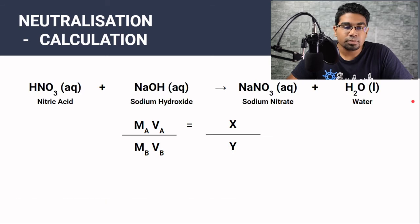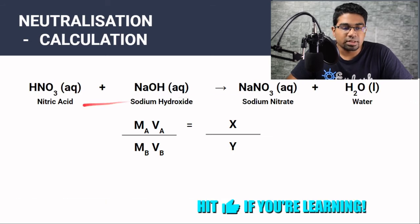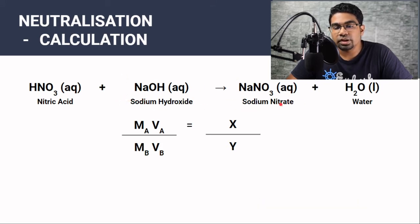How to apply this formula? Let's take a look at this example. We have nitric acid reacting with sodium hydroxide solution to form sodium nitrate and water. The first thing we have to look at is the mole ratio. So we have to figure out what is X and what is Y.